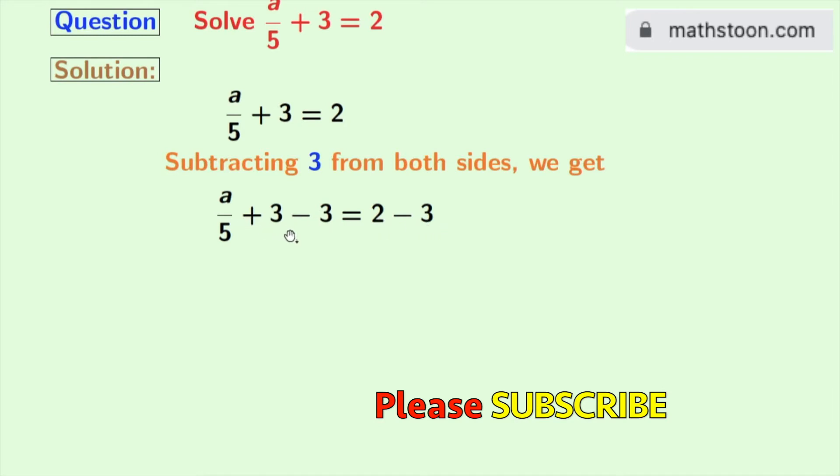Look at that. In the left hand side, we have plus 3 and minus 3, which is 0. So, we are left with a by 5.